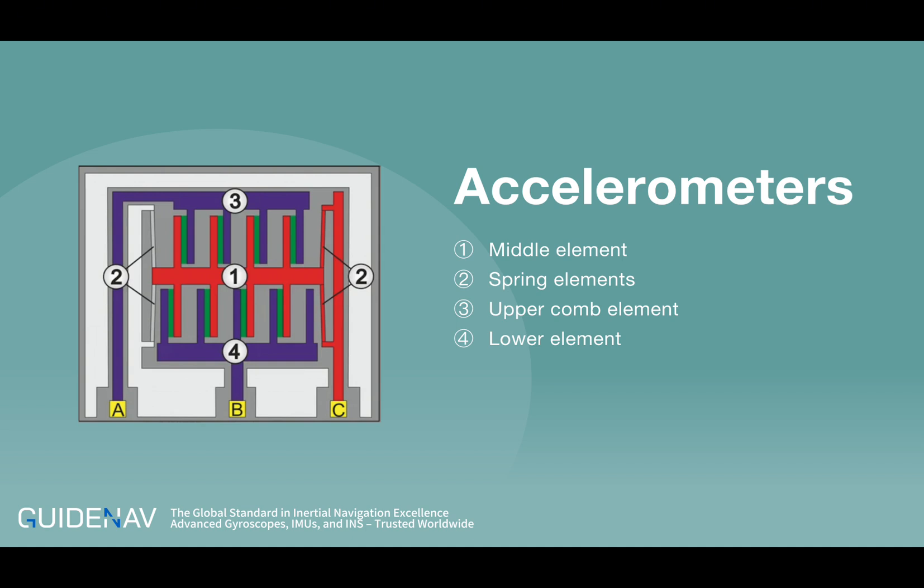The upper comb element three and the lower element four are firmly connected to the sensor housing. The interlocking teeth of the combs represent capacitors which, due to their size and the instantaneous distance between the connection points A and C or B and C, have a certain measurable capacitance.